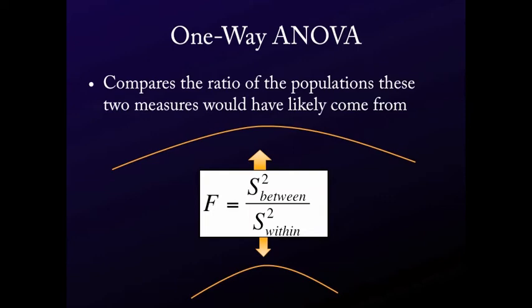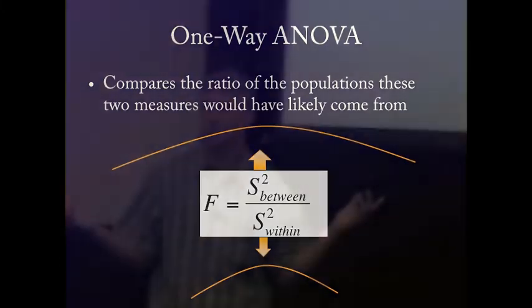And then what you do is you compare the ratio of those two. And if that ratio, if they look like they're more or less the same, the likely distribution from this between measure of variance and the likely distribution from this within measure of variance, they're basically the same. You can say all we're seeing is stuff by chance. Again, it's that signal and noise. There is no signal. If those two looked identical, there would be no signal.